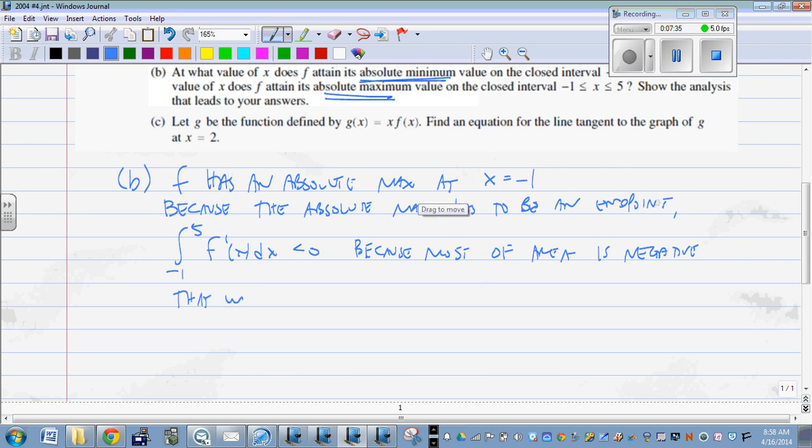And then that would mean that f of five minus f of negative one is less than zero, and f of five is less than f of negative one.